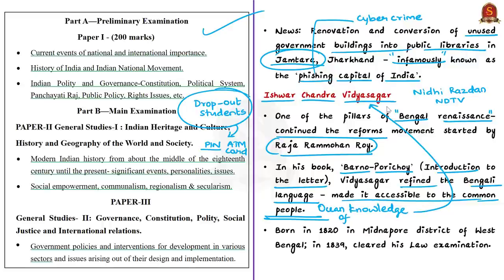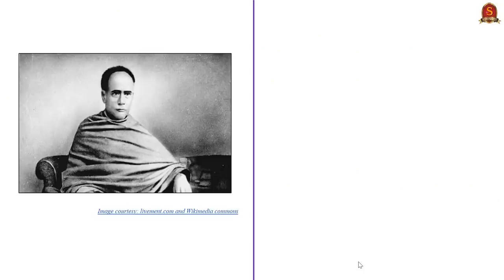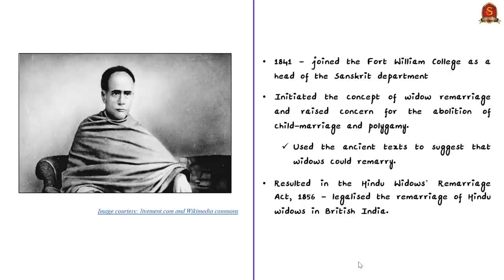He was born in 1820 in Midnapur district of West Bengal. After completion of elementary education at the village school, his father took him to Kolkata. In 1839, he successfully cleared his law examination. In 1841, at the age of 21 years, he joined Fort William College as the head of the Sanskrit department. In 1846, he joined the Sanskrit College as assistant secretary. In his first year of service, he recommended a number of changes to the existing education system, which resulted in a serious dispute between him and the college secretary.